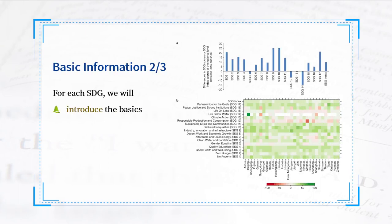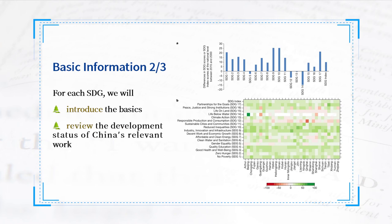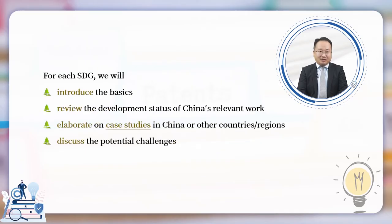Turning to the specific contents of the course, for each SDG we shall introduce the basics, then deep discussions that stay relevant to the given topic will be encouraged. The figures on the right side of this slide show how China has performed against the different SDG goals during the period of 2000 to 2015. The upper one shows performance at the national level, the lower one shows the regional heterogeneity in SDG scores. We shall explore some case studies of China in the arena of SDGs.